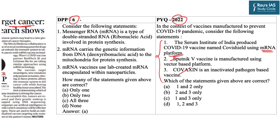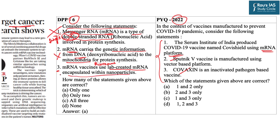DPP question number six: consider the following statements. Statement one: messenger RNA (mRNA) is a type of double-stranded RNA — factually incorrect, mRNA is single-stranded RNA. Statement two: mRNA carries genetic information from DNA to the mitochondria for protein synthesis — incorrect, it carries information to ribosomes, not mitochondria. Statement three: mRNA vaccines use lab-created mRNA encapsulated within nanoparticles — this is correct. Therefore only one statement is correct and option A is the correct answer. The answer to the previous question is option B, two and three only.